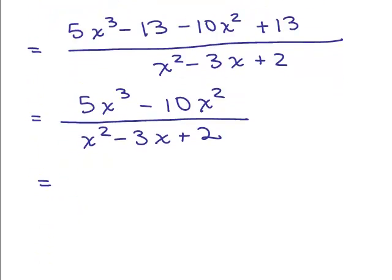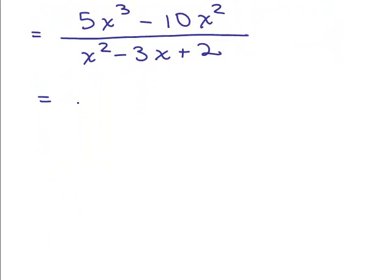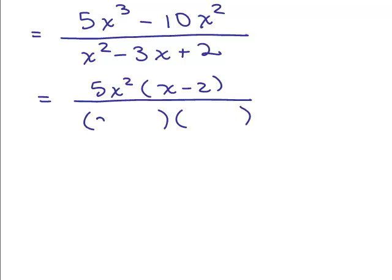And at this point, again, we're going to try factoring. So the common factor in the numerator is 5x squared so that's what we could take out. And in the denominator this time it factors to x minus 2 times x minus 1. And the difference is I need these to both be negative to get a positive 2. And this factorization does give me a negative 3x for the middle term.